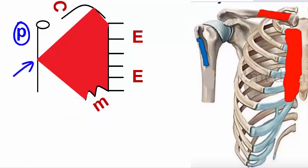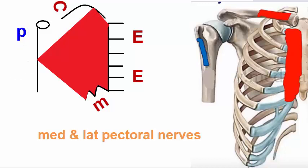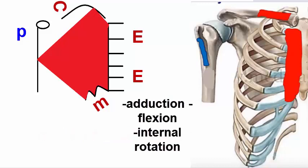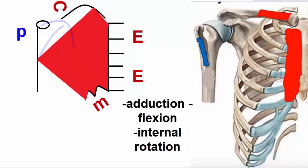The letter in blue represents the insertion, which is into the lateral lip of the bicipital groove of the humerus. Nerve supply comes from the medial and lateral pectoral nerves. For its actions, the insertion moves toward the origin — all are inward movements: adduction mainly by the sternocostal head, flexion by the clavicular head, and internal rotation.